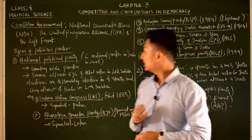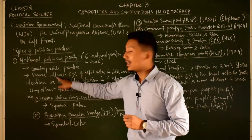A party is recognized as a national party if it secures at least six percent of total votes in the Lok Sabha elections.